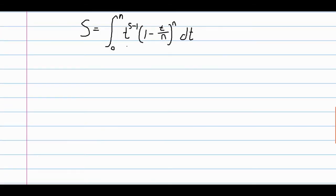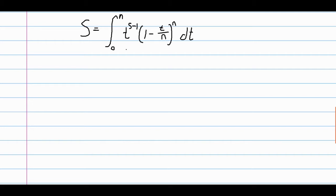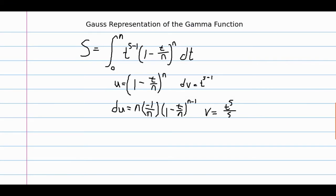That is something we'll note at the end of this proof. We want to keep our integral like this and actually manipulate it so that we get that infinite product. We're going to integrate this by parts. We're going to say that u is equal to 1 minus t over n to the n, and dv is just equal to t to the s minus 1. The reason why I'm not simplifying is — well, we'll see. Just keep n over n for now.